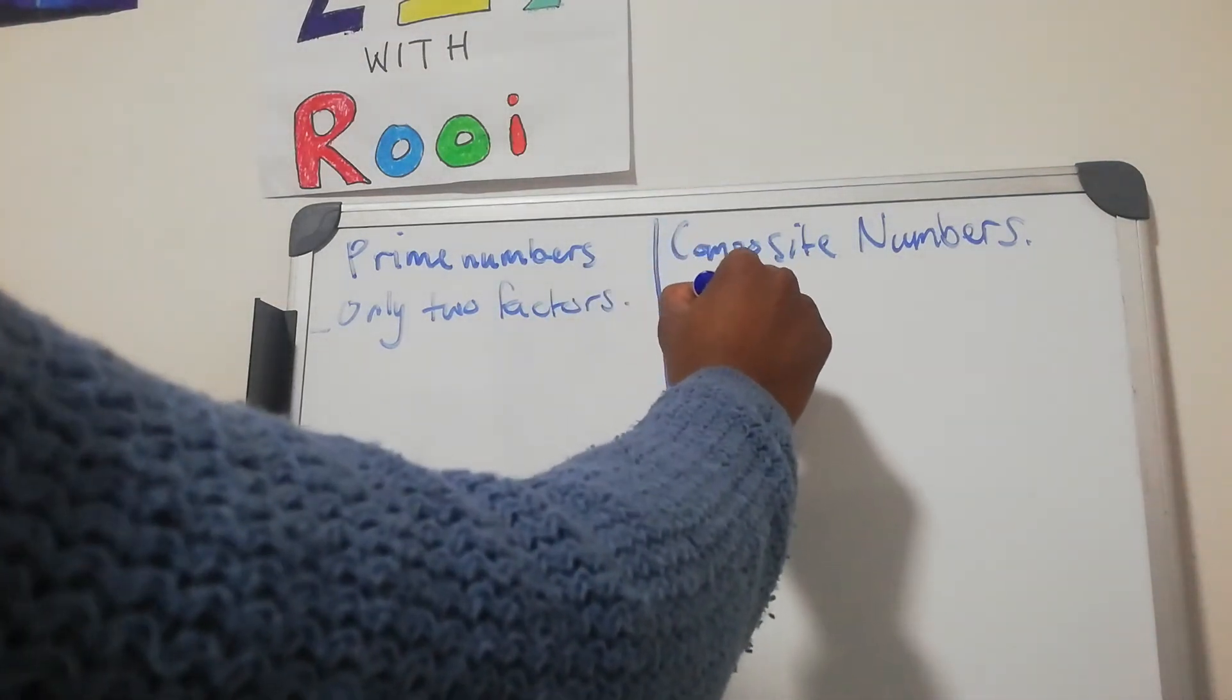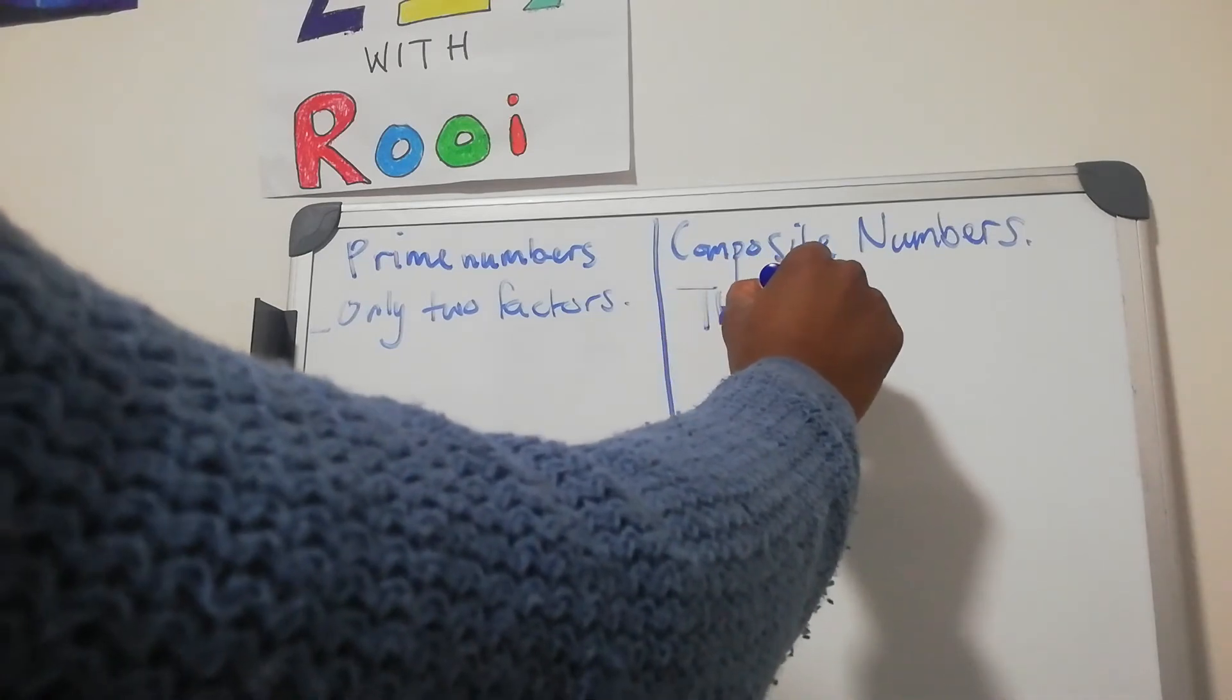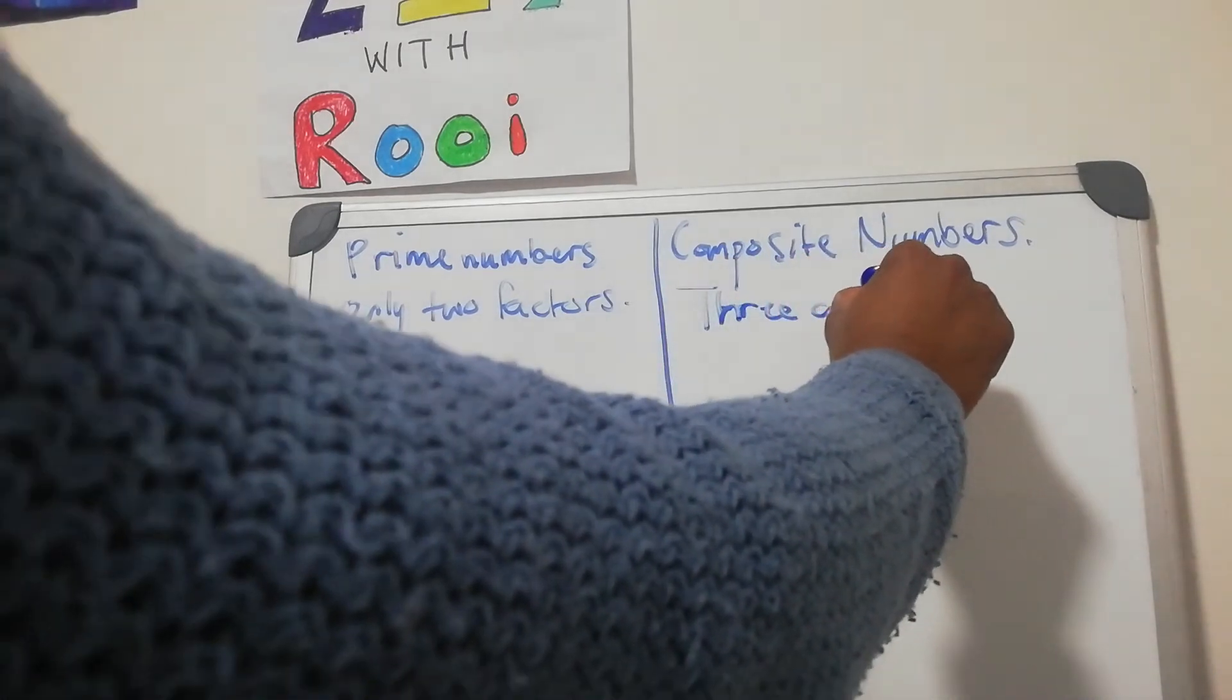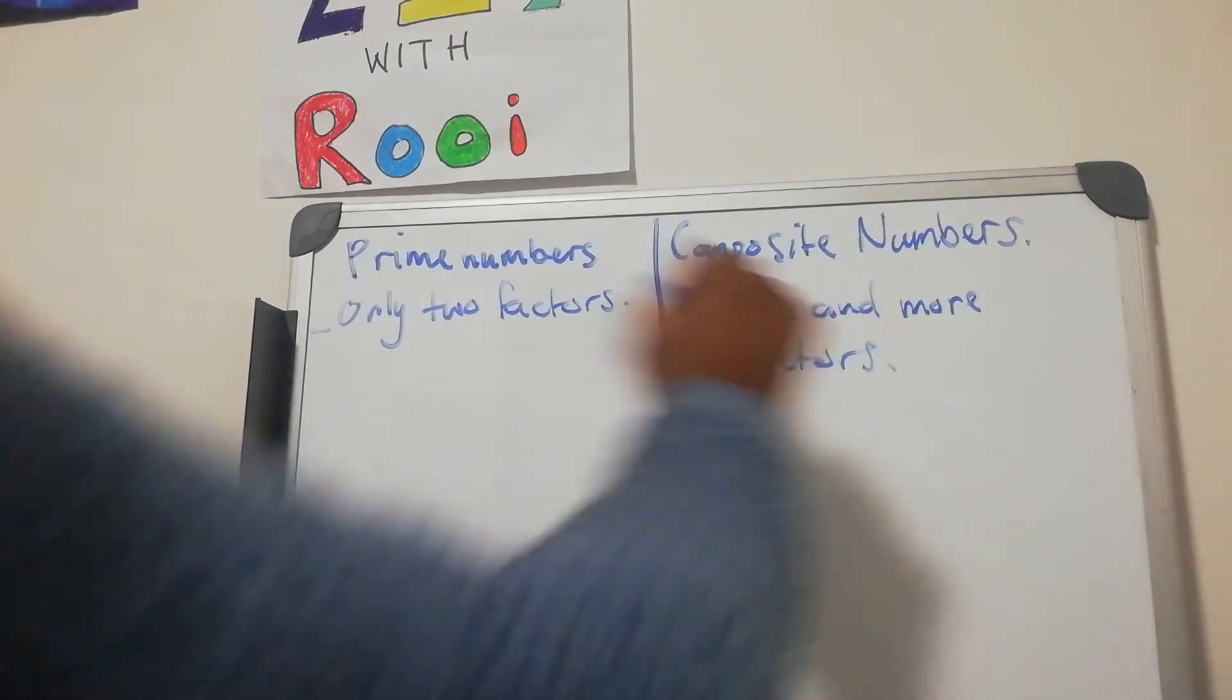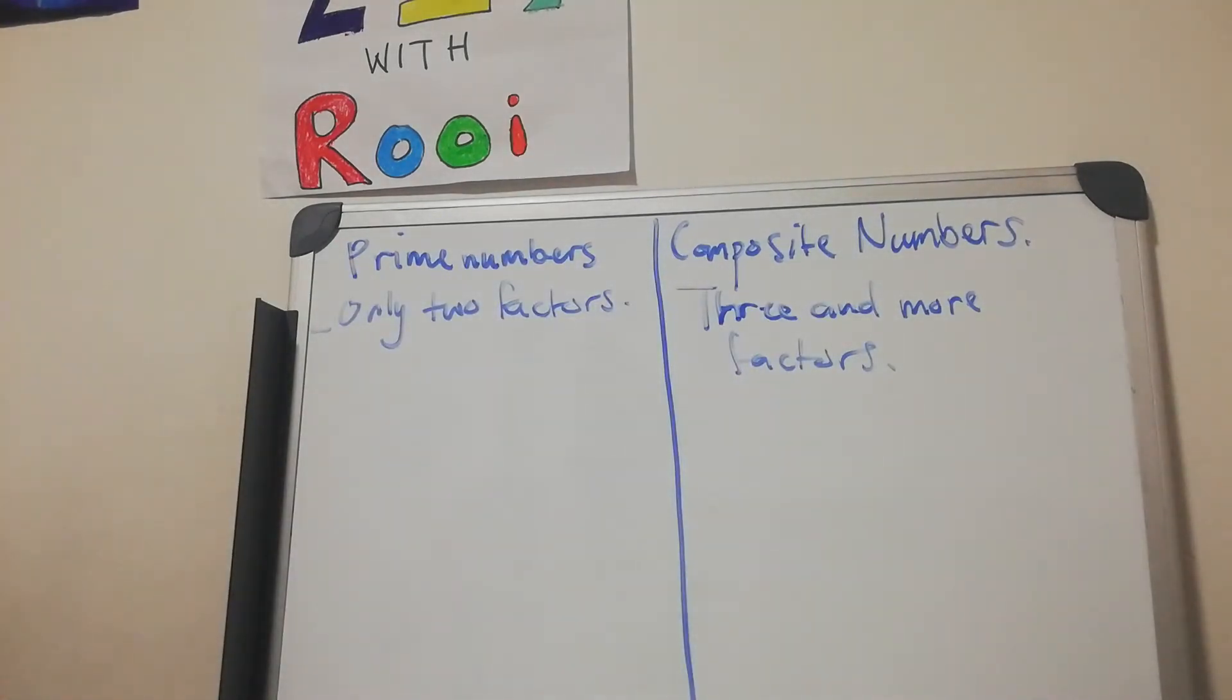They have only two factors, which is one and the number itself. Whereas composite numbers have three and more factors, because if it has two factors then it is a prime number.